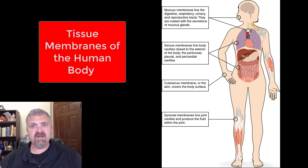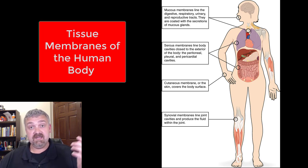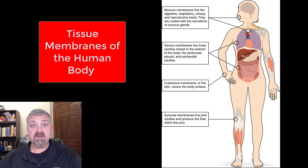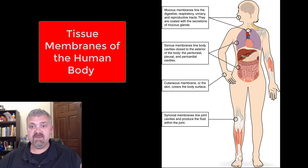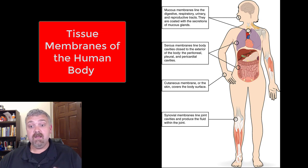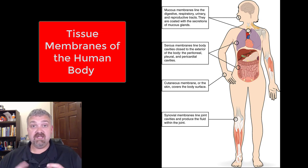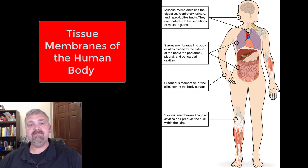Those are your four membrane types: mucous membranes that line cavities exposed to the exterior, serous membranes that line cavities that are not exposed to the exterior, the cutaneous membrane which is your skin, and then your synovial membranes which line your synovial joints inside your body.